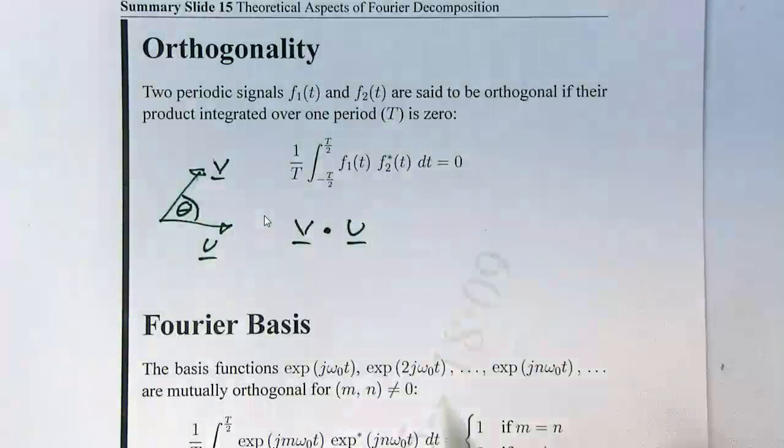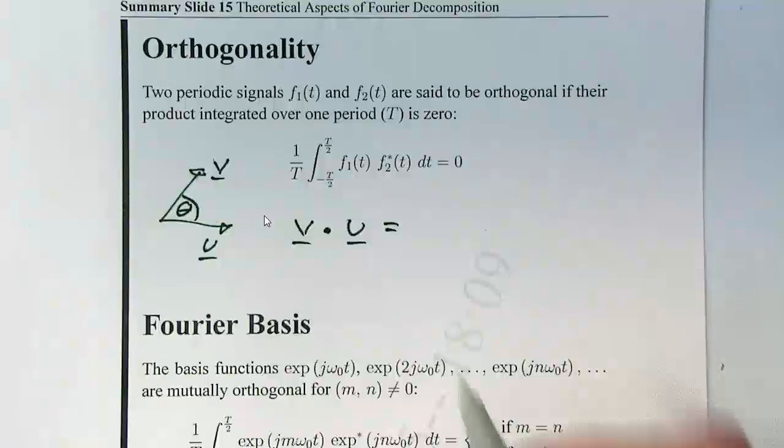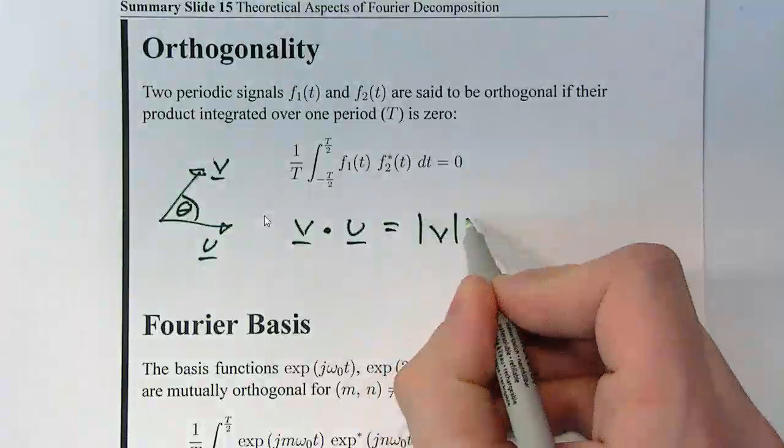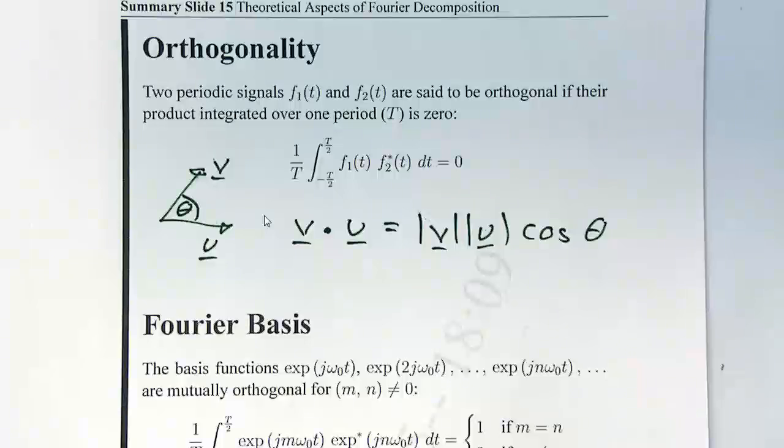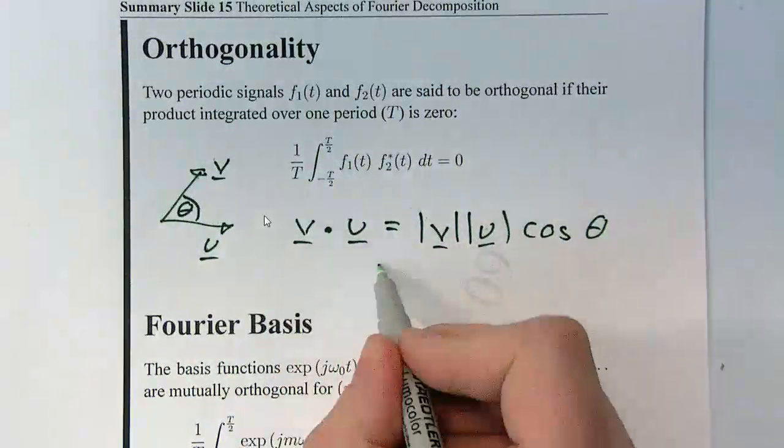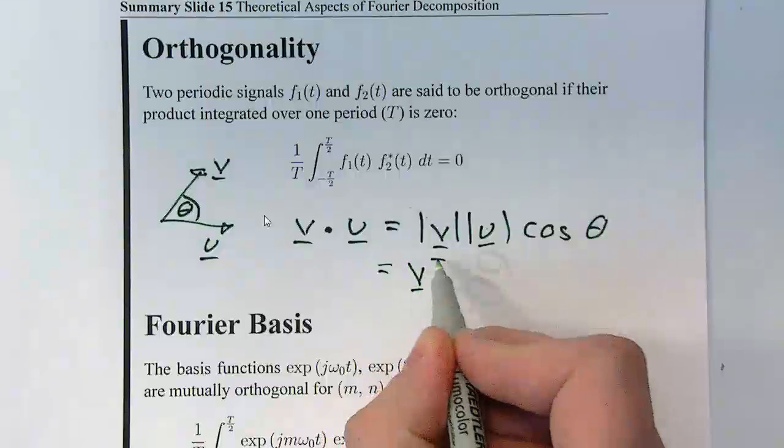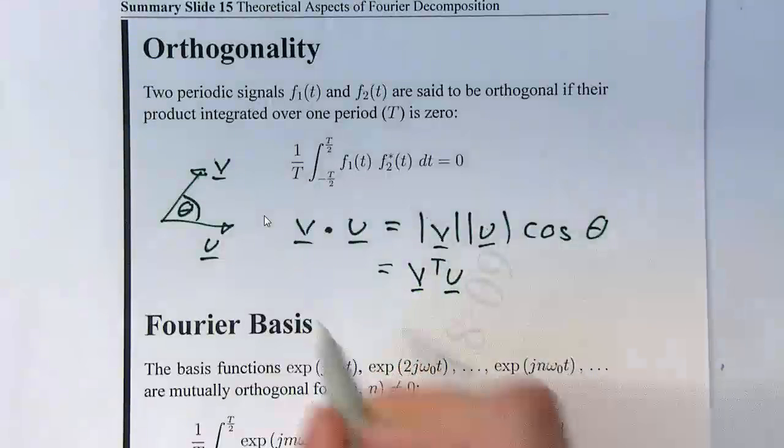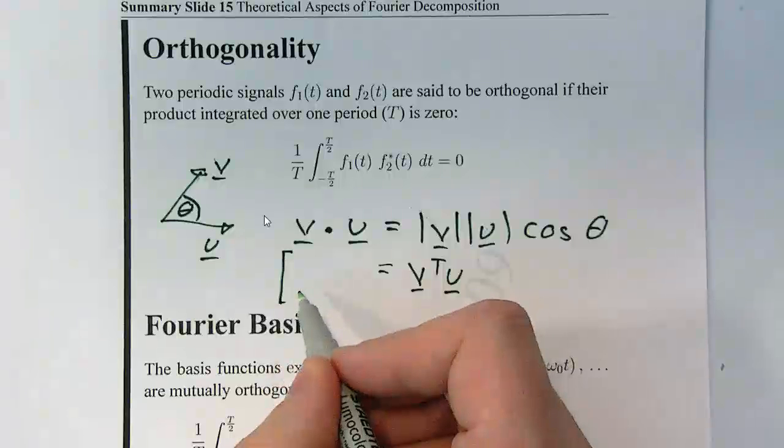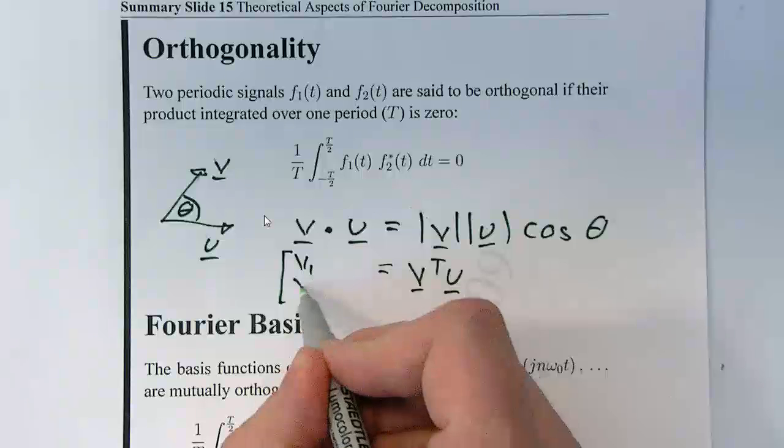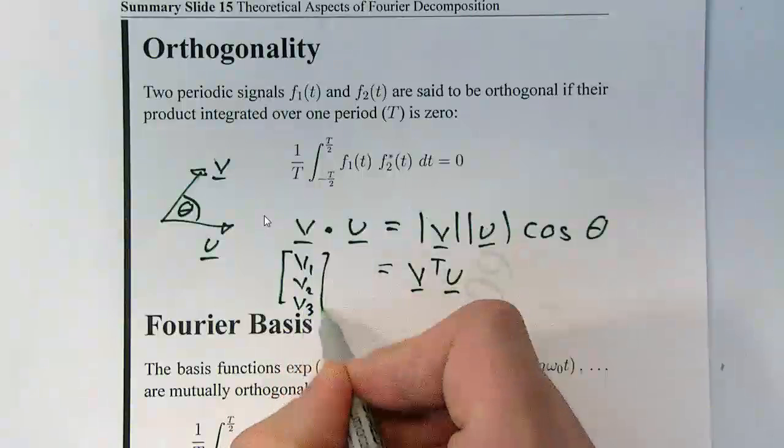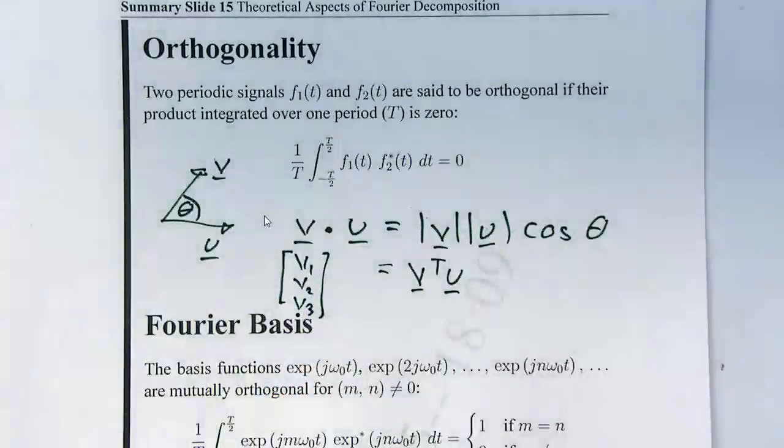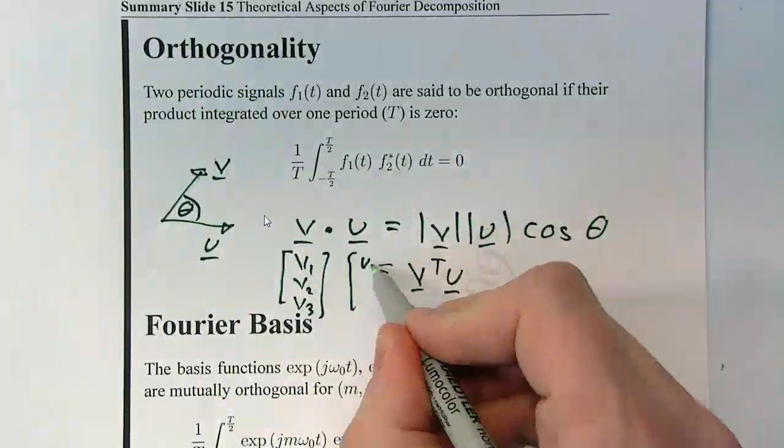You would find the contribution of v in terms of u, you could work out the dot product, couldn't you? So you might find v dot u to find the contribution of v in the direction of u. And you've come up with various methods of solving that, so it could be a trigonometric form. I tend to use the alternative representation, which is if these are column vectors, you would also write it as v transpose times u.